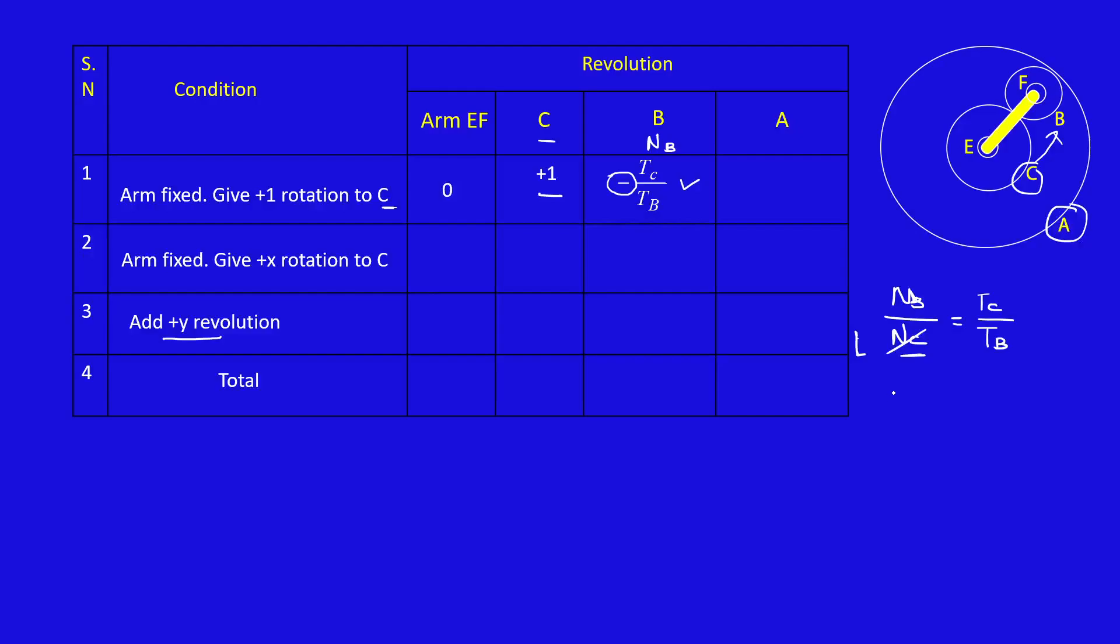Next we have to find out NA. A touches with B. NB equal to TB divided by TA. Again NA equal to NB multiplied by TB divided by TA. What is NB value? Take only the magnitude. TC divided by TB, that is NB. Again TB divided by TA.